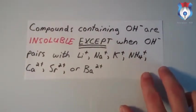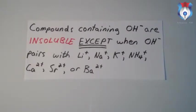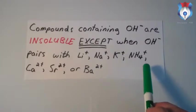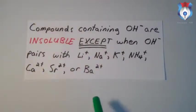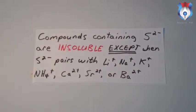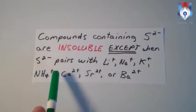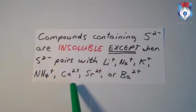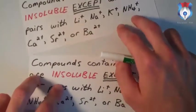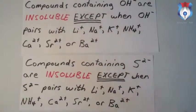Now let's look at compounds that are generally insoluble. Compounds containing hydroxide ion (OH⁻) are insoluble, except when the hydroxide ion pairs with lithium, sodium, potassium, ammonium, calcium, strontium, or barium ion. Compounds containing the sulfide ion (S²⁻) are insoluble, except when paired with lithium, sodium, potassium, ammonium, calcium, strontium, or barium ion. The only difference is that when hydroxide pairs with calcium, strontium, or barium, the resulting compound is said to be slightly soluble — not quite soluble, not quite insoluble, just somewhere in between.